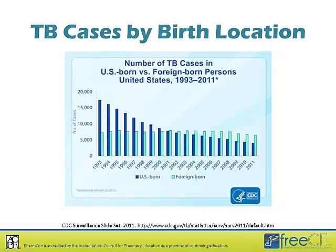This puts into perspective the risk associated with being born in an area where prevalence is significantly higher than the United States. Looking at TB cases by birth location comparing US-born to foreign-born citizens, the y-axis shows number of cases and the x-axis shows year. The most recent 2011 data shows that the majority of cases are really in foreign-born citizens. This is important as part of our history-taking when we're trying to determine if somebody has risk factors for tuberculosis.